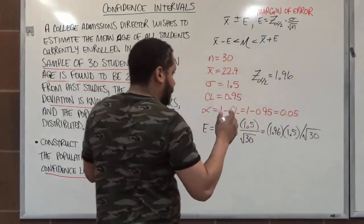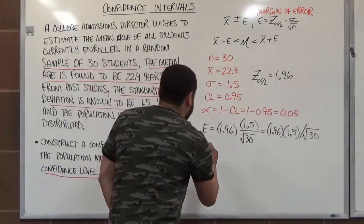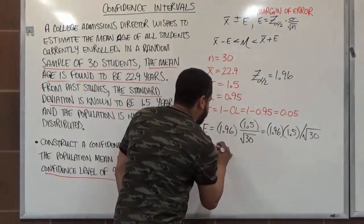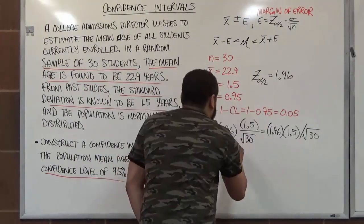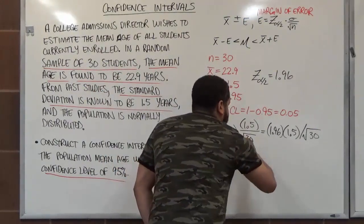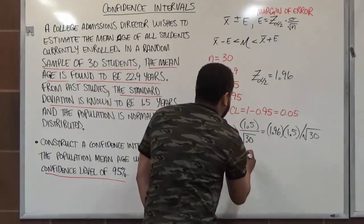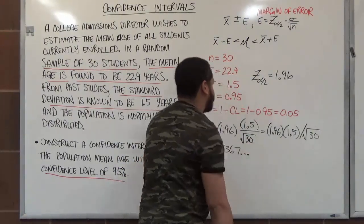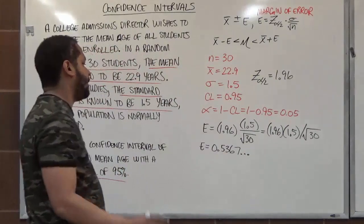And if we calculate this correctly, we should get the correct result. So our margin of error here is 0.5367. We're going to stop writing these numbers down. If you're using your calculator, you'd understand why.